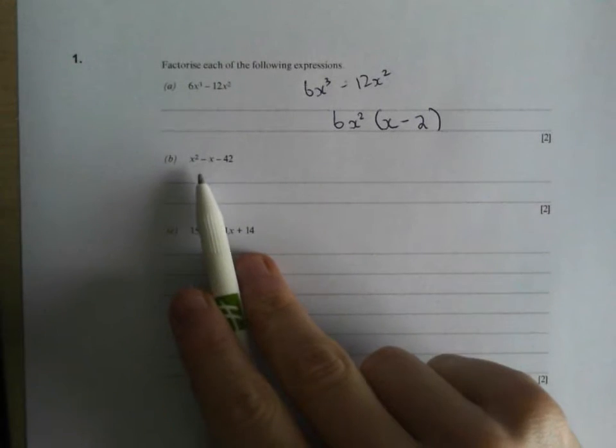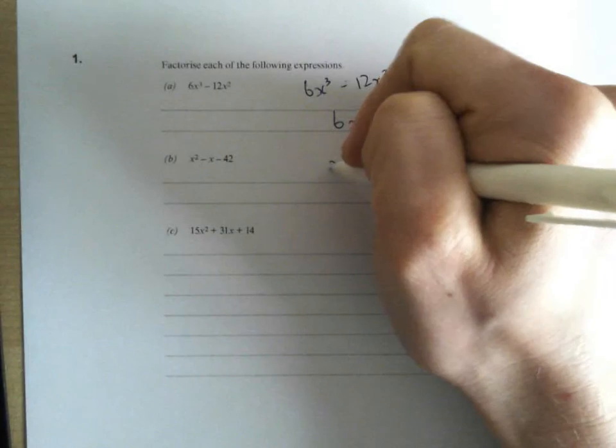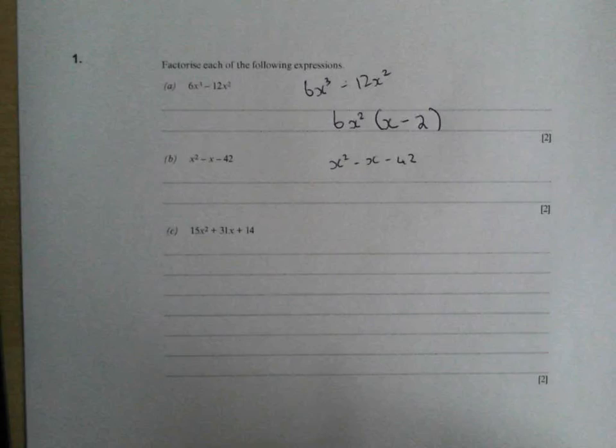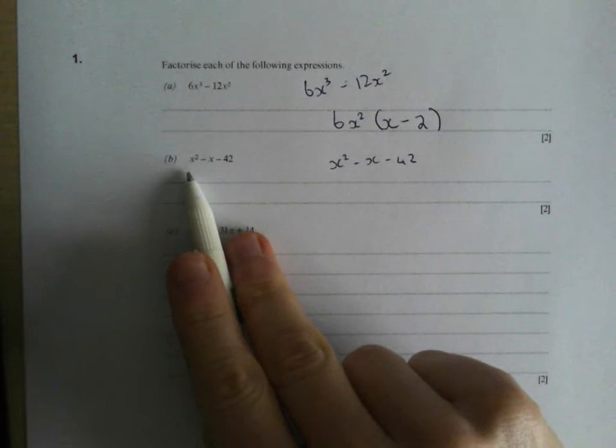All right, what about this? Quadratic. I like these. So we've got x squared minus x minus 42. It's up to you. You may have been taught a slightly different way of doing these, but this is how I set them out when they've just got a single x squared.